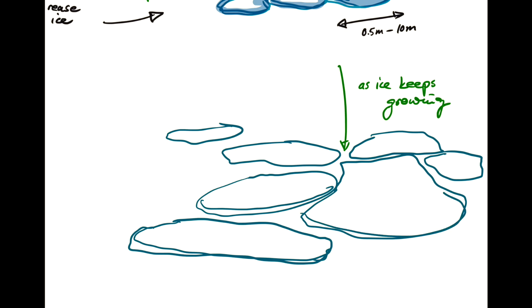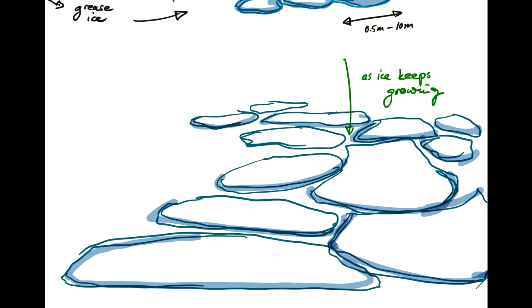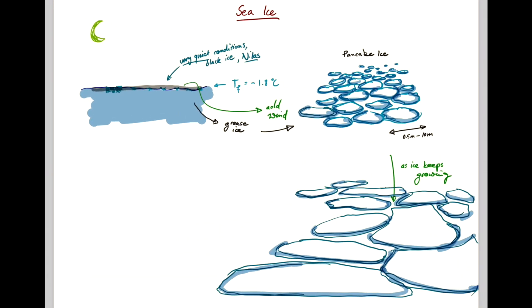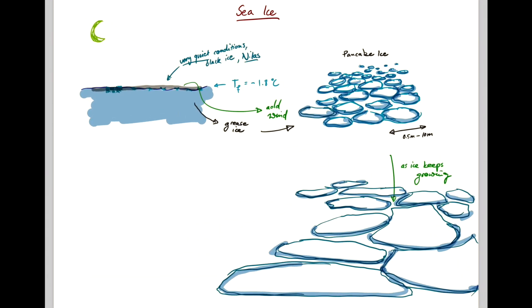Sometimes you still see the elevated borders at the edges. And so we call these ice flows and you would refer to such a situation as a loose pack ice.